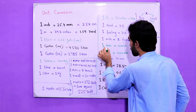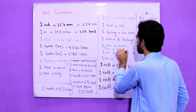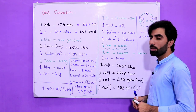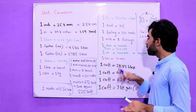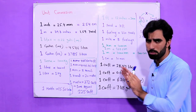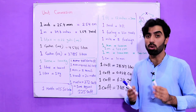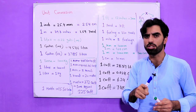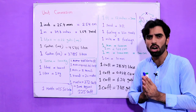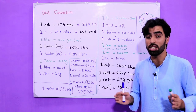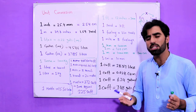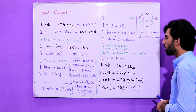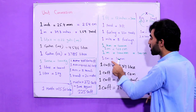In one kilometer we have 1,000 meters. In one meter we have 100 centimeters, and in one meter we also have 1,000 millimeters. You should remember these things. You can download charts or search online, because unit conversion is very important for civil engineers — without it you can't find quantities of materials, plots, or any structure.